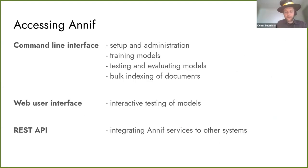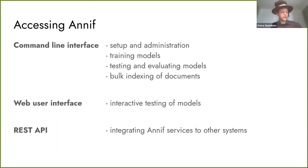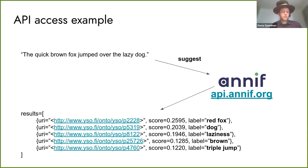There are three ways to access ANIF. The command line interface is used for setting up and administering projects, training models, and evaluating them. There is also a lightweight web user interface for interactive testing of models. Finally, ANIF can run as a service providing a REST API for integration with other systems. The most important REST API method is called Suggest — it takes text as input and returns a list of subject suggestions, each with an identifier, a label, and a score estimating the quality of the suggestion.